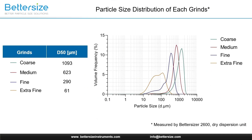Here are the particle size distribution curves obtained from the BetterSize 2600. As we can see, the particle sizes of coffee decrease when the grinds move from the coarse end to the finer end. The D50s of coarse, medium, fine, and extra fine grinds are around 1100, 600, 300, and 60 microns respectively.